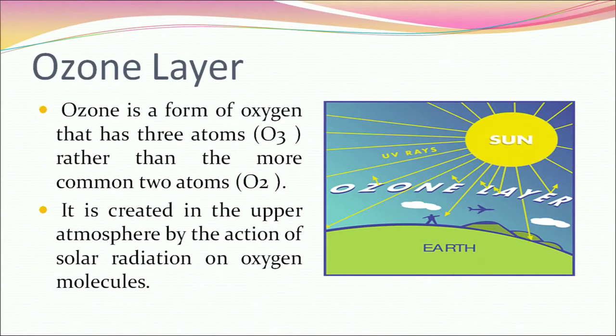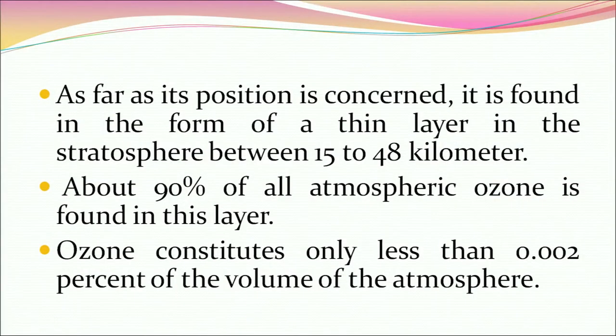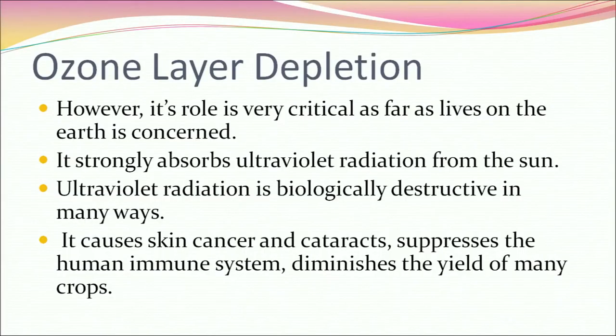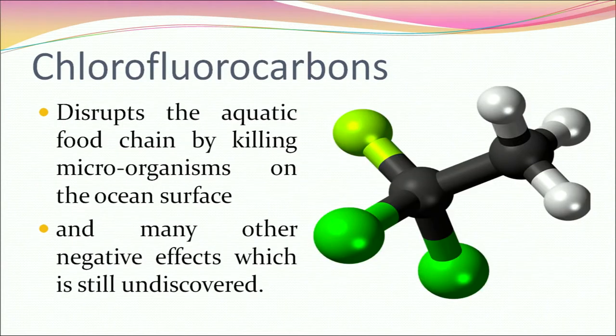Now let's talk about the ozone layer. Ozone is a form of oxygen that has three atoms rather than the more common two atoms O2. It is created in the upper atmosphere by the action of solar radiation on oxygen molecules. It is found in a thin layer in the stratosphere between 15 to 48 km, and about 90% of all atmospheric ozone is found in this layer. Ozone constitutes less than 0.002% of the volume of the atmosphere. However, its role is very critical for life on earth. It strongly absorbs ultraviolet radiation (UV rays) from the sun. UV radiation is biologically destructive — it causes skin cancer, cataracts, suppresses the human immune system, diminishes the yield of many crops, and disrupts the aquatic food chain by killing microorganisms on the ocean surface.